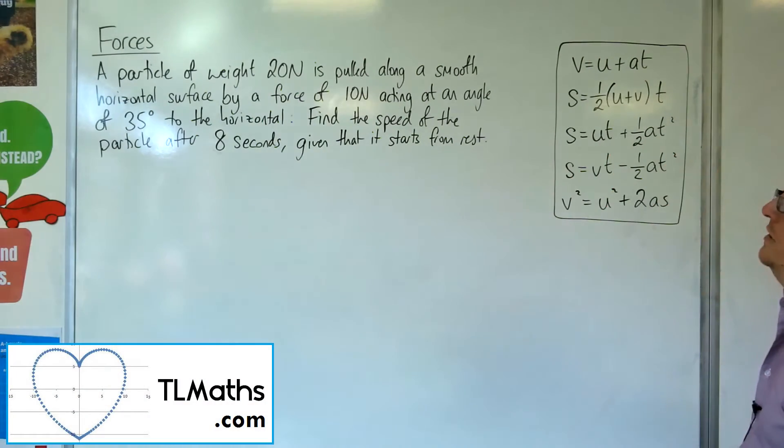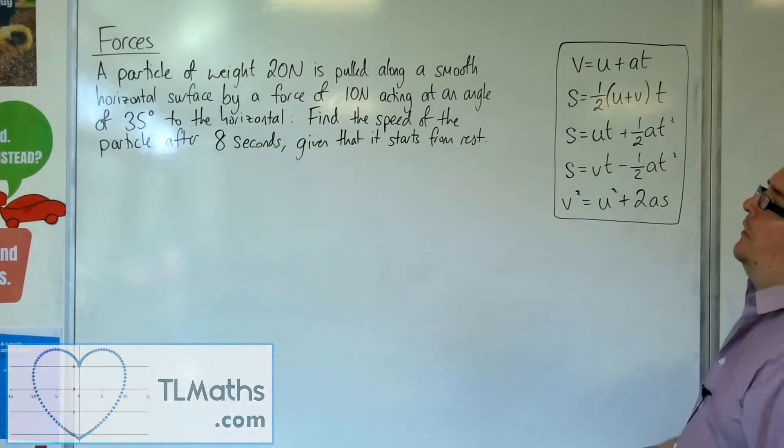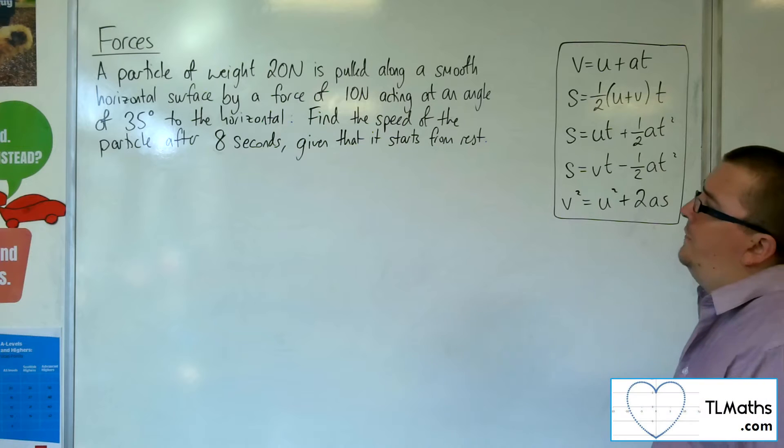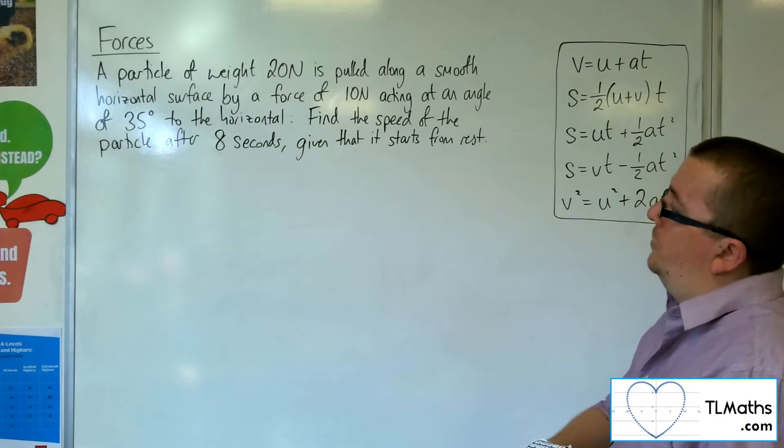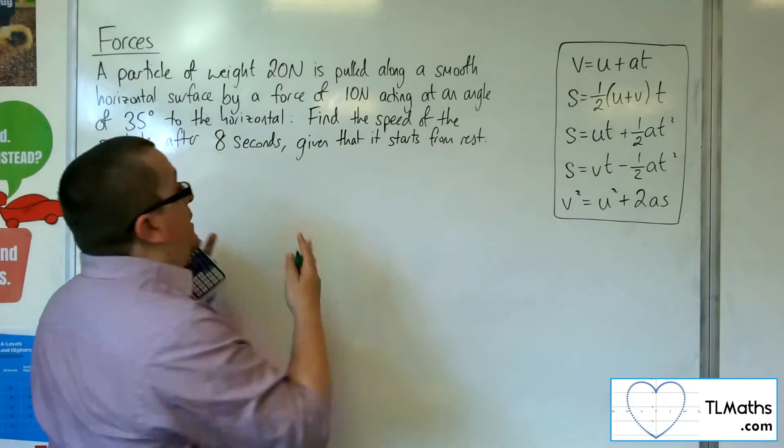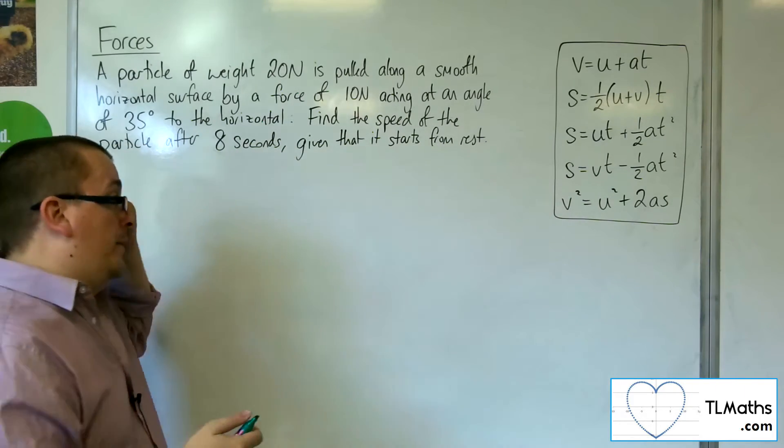In this video we've got a particle of weight of 20 newtons, it's pulled along a smooth horizontal surface by a force of 10 newtons, acting at an angle of 35 degrees to the horizontal. Let's draw a diagram so we can visualise what's going on.